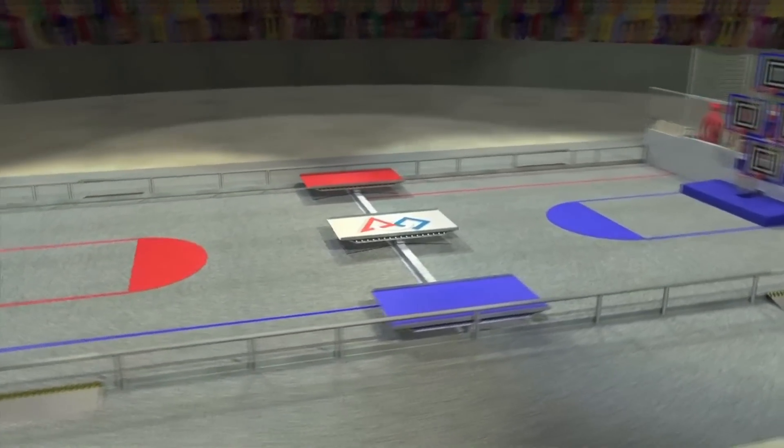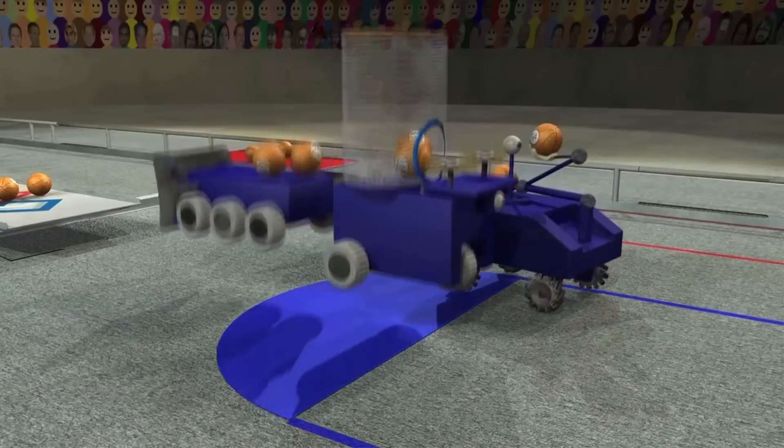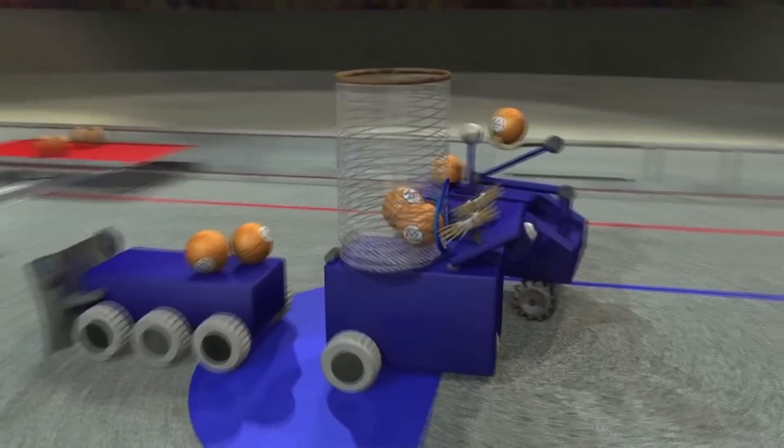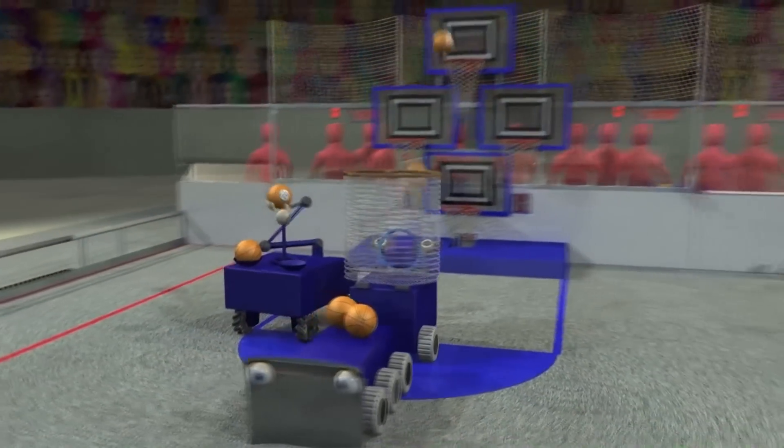A low barrier extends across the middle of the field. Three bridges cross over the barrier. The match begins with each robot touching their key at the far end of the court. Robots can be preloaded with one or two basketballs each.